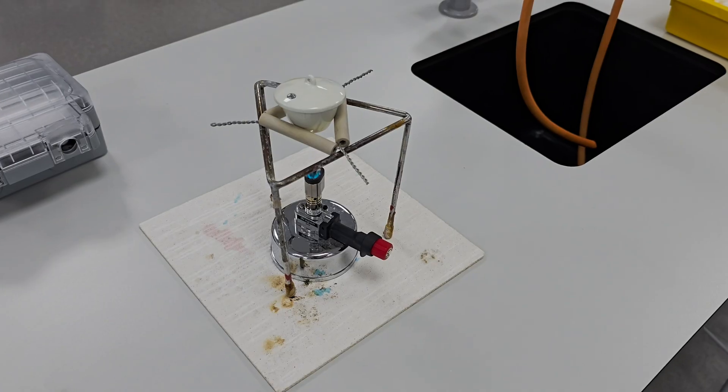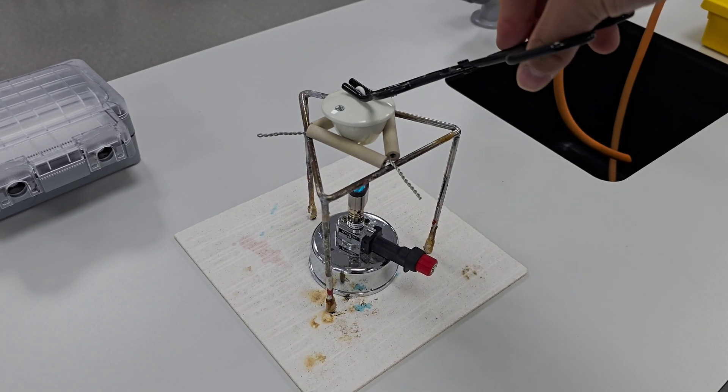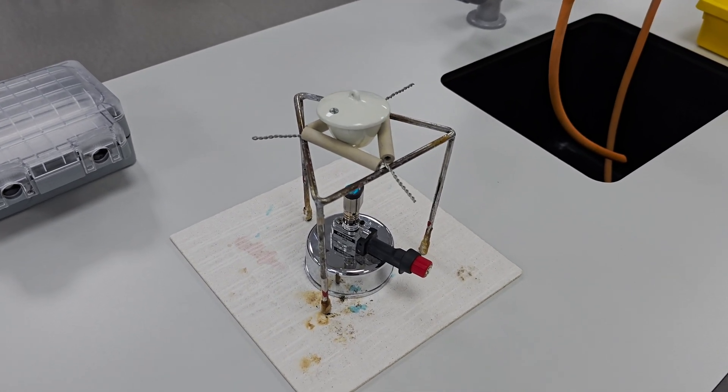Let's heat the crucible again for a couple minutes to make sure all the magnesium has reacted. Then we'll measure the mass again. If it changes we know we need to keep heating it until the mass stays the same.